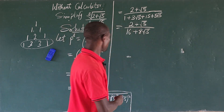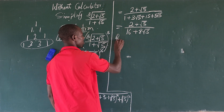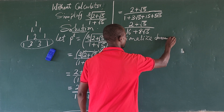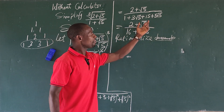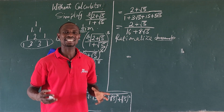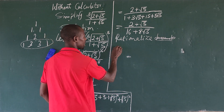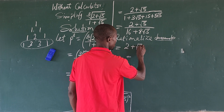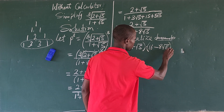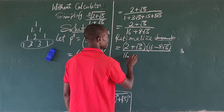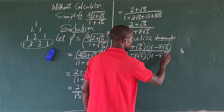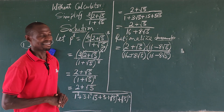Next, we rationalize the denominator. We multiply both the numerator and denominator by the conjugate of the denominator, which is (16 − 8√5). So we have (2 + √5)(16 − 8√5) all over (16 + 8√5)(16 − 8√5).